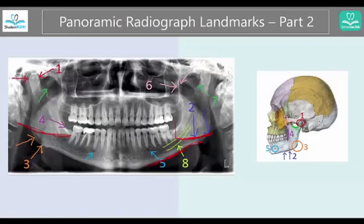With the ghost image concept, we already studied it in terms of earrings — you'll see them blurry and higher up on the other side. But ghost image also applies to the spine and the mandible.